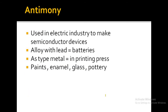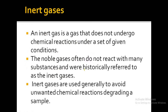The last metalloid in your syllabus is antimony. Antimony is used in the electric industry to make semiconductor devices. An alloy of antimony with lead is used in making batteries. Because it becomes hard, it is used as a typing metal in the printing press. Antimony is also used in the paint, enamel, glass, and pottery industries.